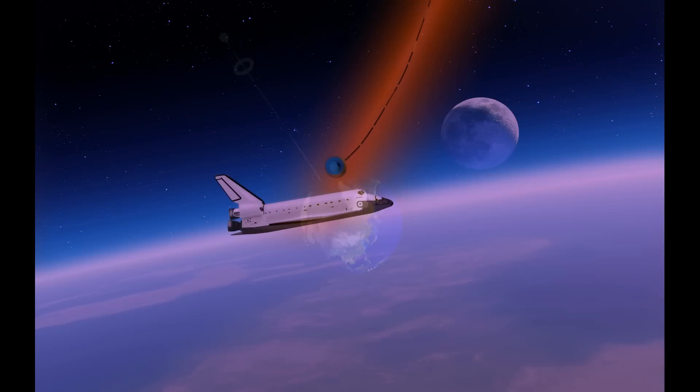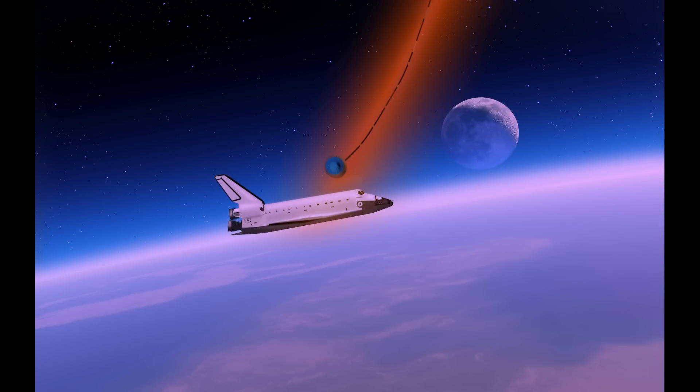A Skyhook is a pretty simple concept. A cable that instead of running from the surface of the Earth up past Geosynchronous Orbit, instead hangs from a high orbit down to just over the atmosphere. Ships then fly up to it, get hooked, and can climb up higher.